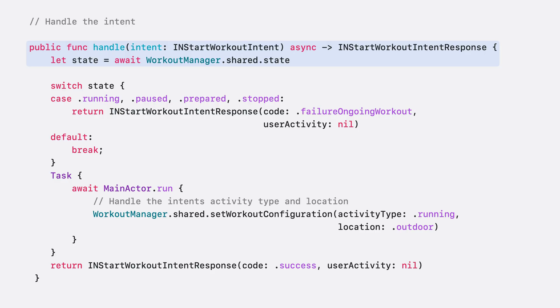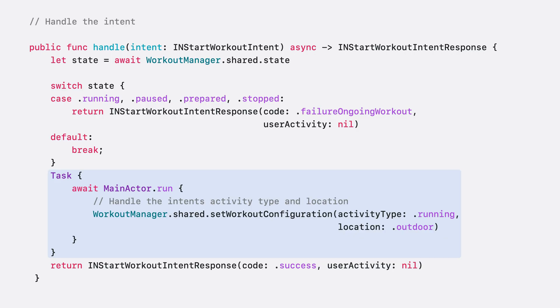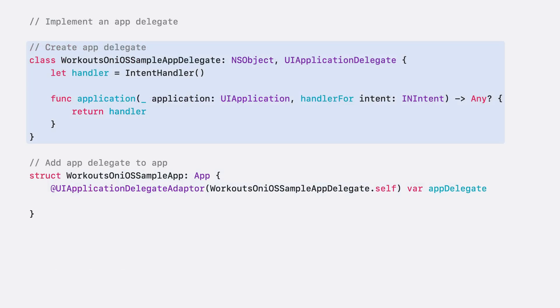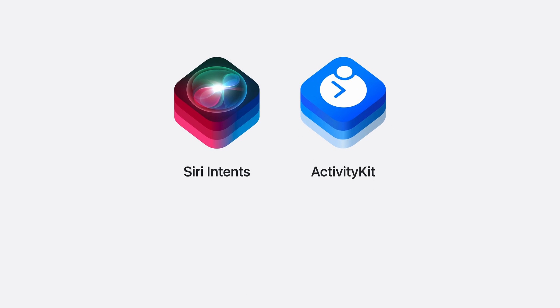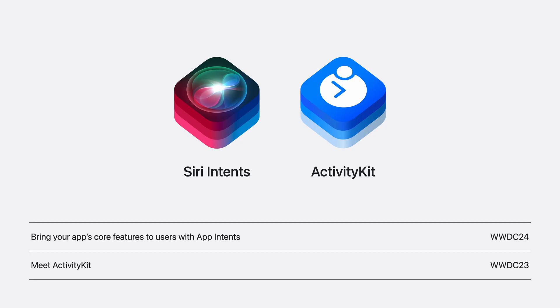Here I've received a start workout intent. You start by first checking if there is a running workout and return a failure if there is. Next, you need to get the activity type and location — for this example, I'll set it to an outdoor run — after which you return a success response. Now that you have intents defined, you need to create an app delegate to respond to them. You will then define the delegate in your app, and with that, your app now supports Siri workout intents from the lock screen. Adding Siri intents and live activities will ensure that the people using your app get the most out of your app regardless of the lock state of the device. For details on both these technologies, check out 'Bring Your App's Core Features to Users with App Intents' from WWDC24 and 'Meet ActivityKit' from WWDC23.